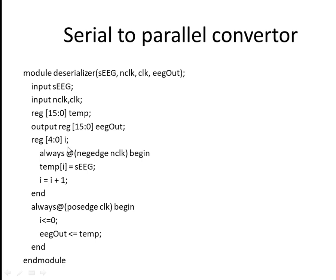Branch I — we also have to store I, which is a register of five bits.